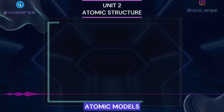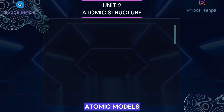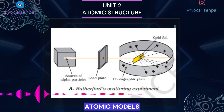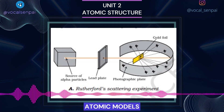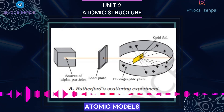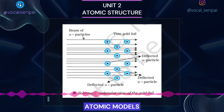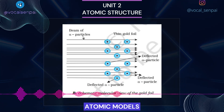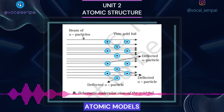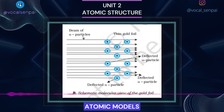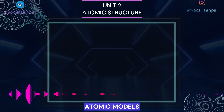Rutherford's Nuclear Model of Atom: Rutherford and his students Hans Geiger and Ernest Marsden bombarded very thin gold foil with alpha particles. A stream of high-energy alpha particles from a radioactive source was directed at a thin gold foil (thickness 100 nm). The thin gold foil had a circular fluorescent zinc sulfide screen around it. Whenever alpha particles struck the screen, a tiny flash of light was produced at that point. The results of the scattering experiment were quite unexpected. According to Thomson's model of atom, the mass of each gold atom should have been spread evenly over the entire atom and alpha particles had enough energy to pass directly through such a uniform distribution of mass.